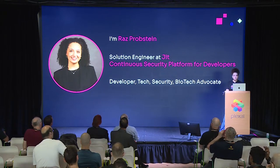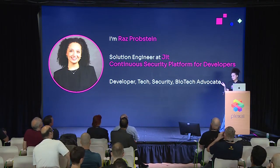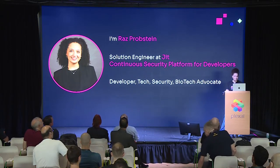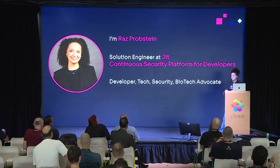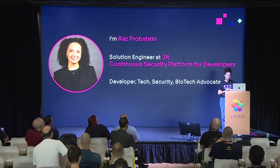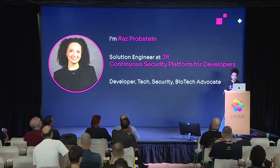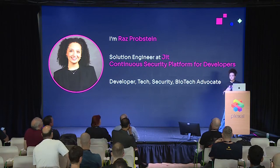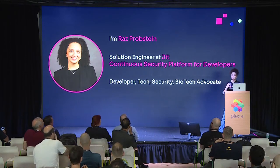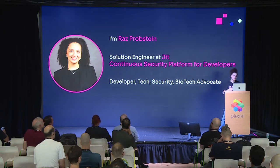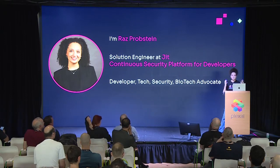Before we dive in, I think we need a quick introduction. Sam did most of the introduction, but I'll do a little more. My name is Raz Probsthen. I'm a solution engineer at JIT. I started as a full-stack engineer and have been one for many years. I joined JIT about a year ago, and after eight months I decided to shift and became a solution engineer. I'm studying for my bachelor's in biotechnology, and I'm a big foodie. JIT is an open DevSecOps orchestration platform helping modern dev organizations own their application security without hurting their dev velocity. We're automating a lot of open-source security tools.